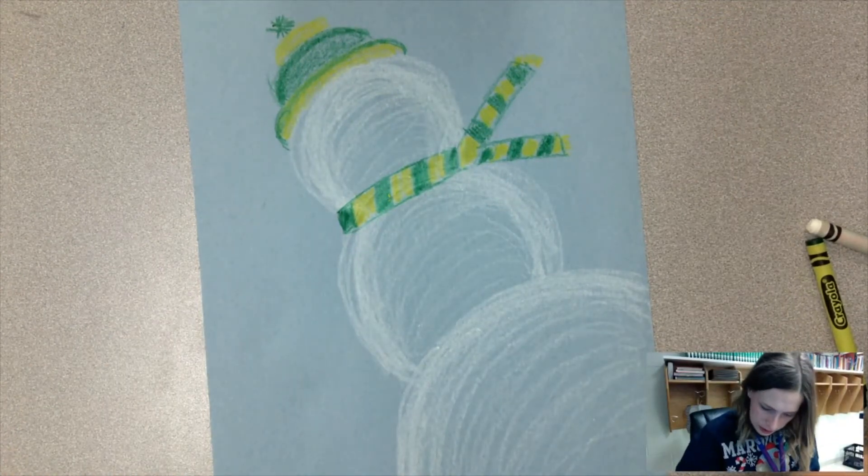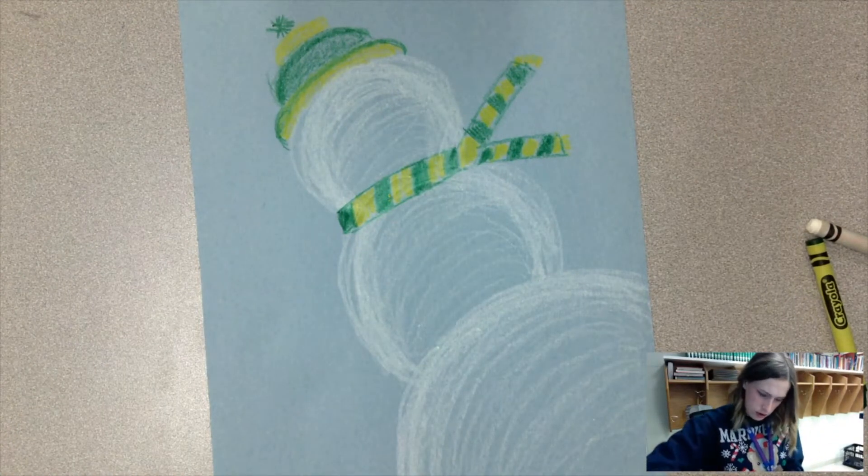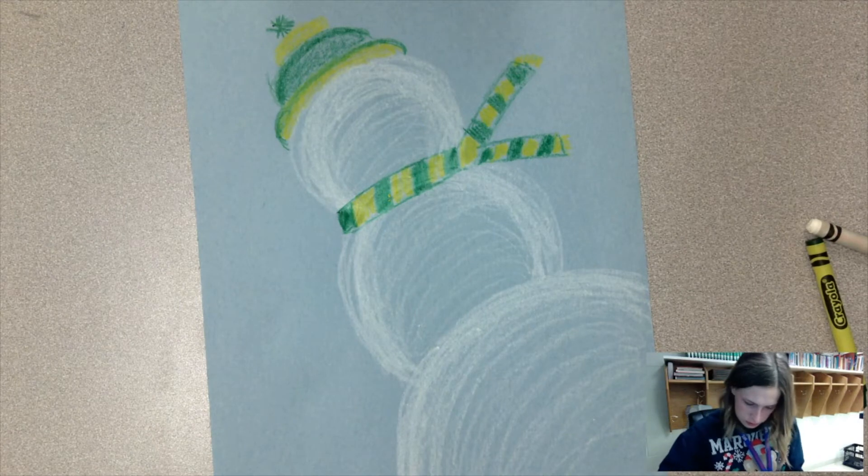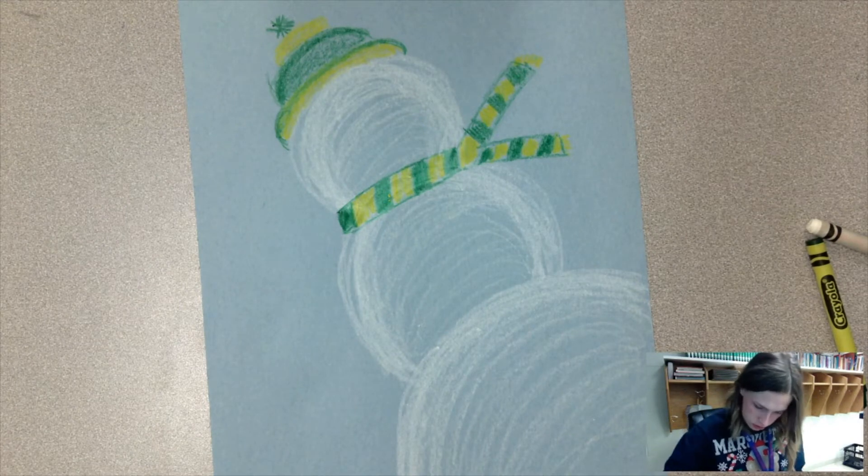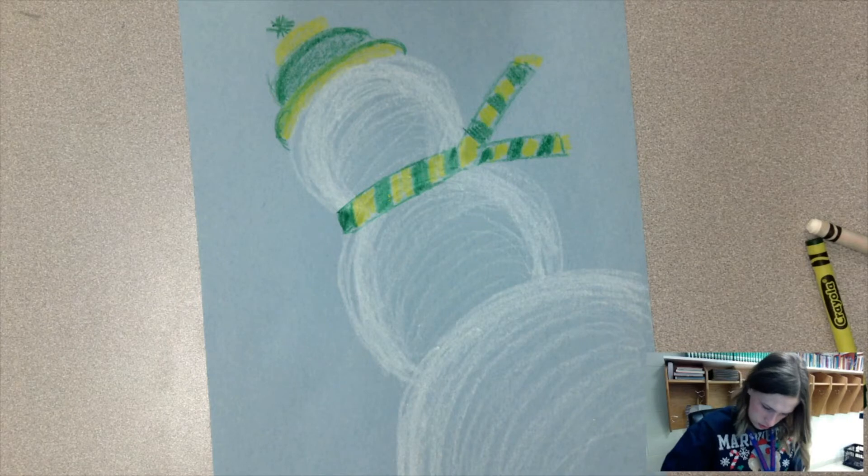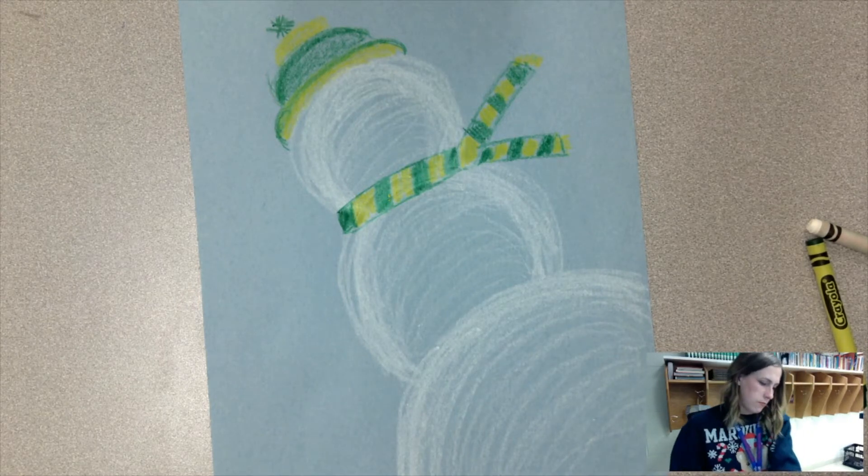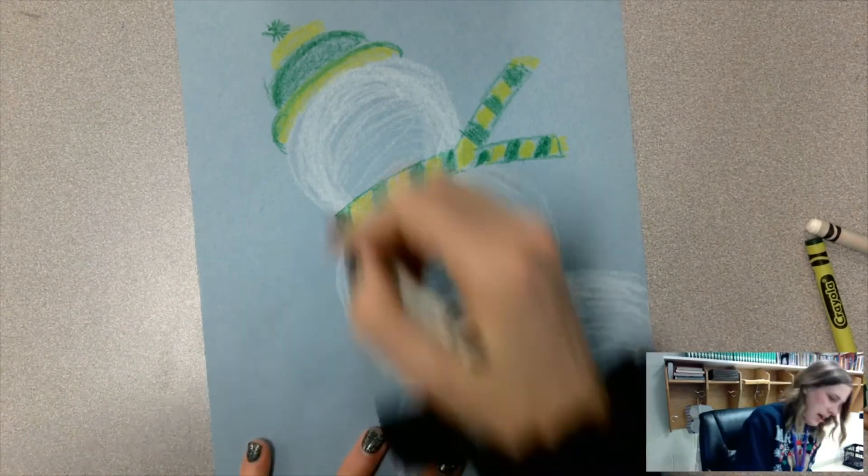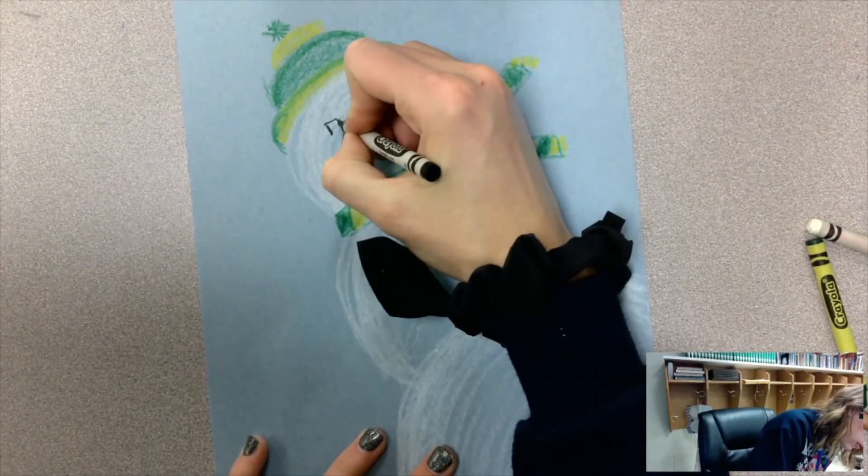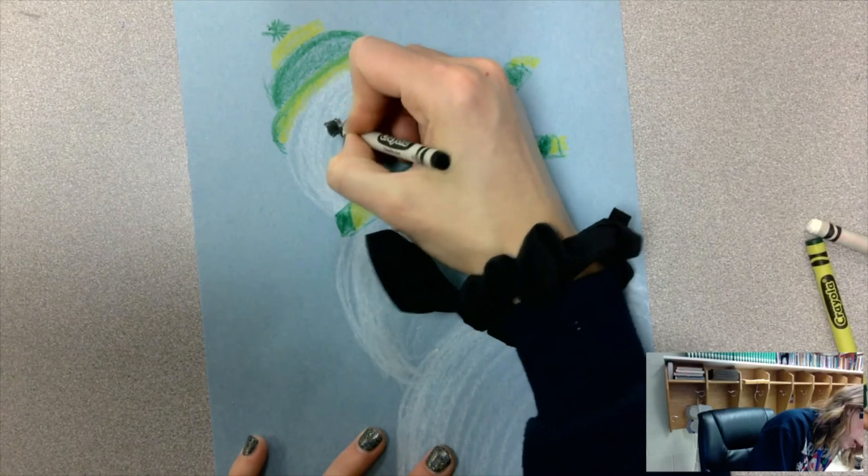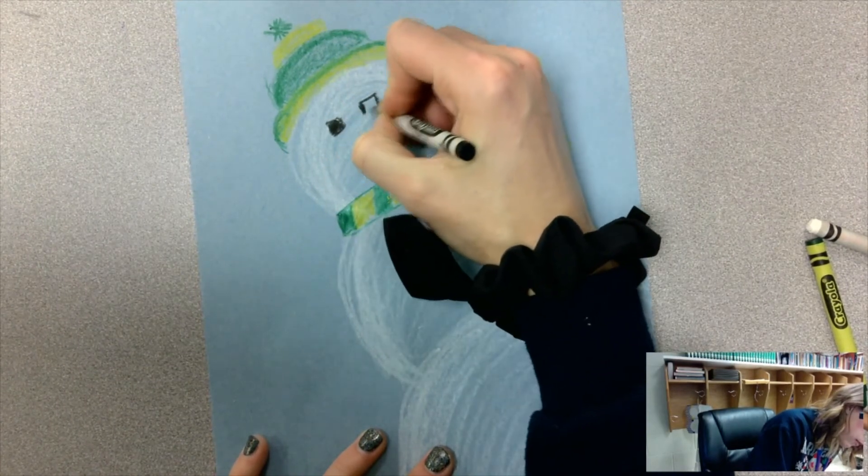Now I'm going to go ahead and take a black crayon. I'm going to use black and brown and yellow, or sorry, orange. There's my brown. So I'm going to start first with his eyes. I'm going to give him some square eyes. You can do circles for him, it doesn't matter.